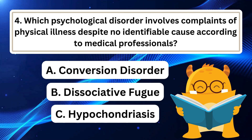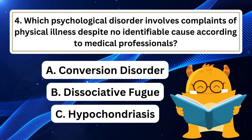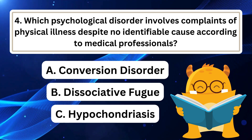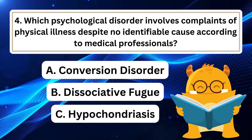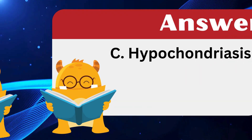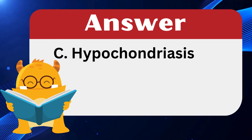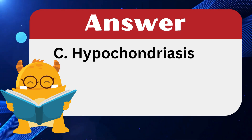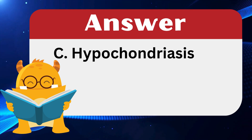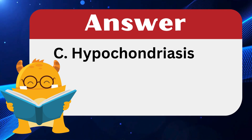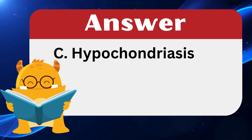Question 4: Which psychological disorder involves complaints of physical illness despite no identifiable cause according to medical professionals? The answer is C: Hypochondriasis. Hypochondriasis is characterized by an individual's persistent complaints of physical illness despite medical reassurance that there is no clear cause for the symptoms. Conversion disorder involves experiencing severe physical symptoms without any identifiable biological cause, while dissociative fugue refers to sudden amnesia where individuals become disoriented and lose their sense of identity.